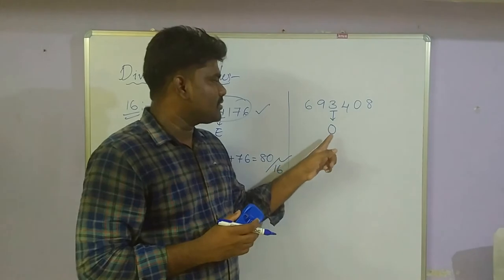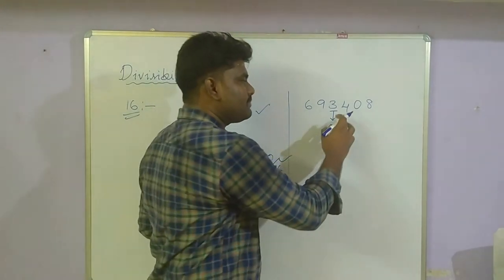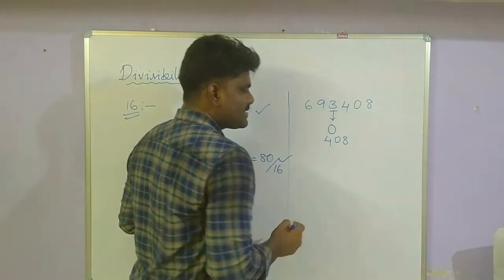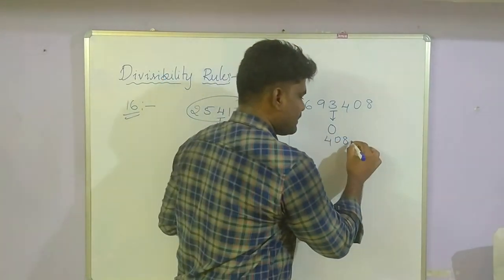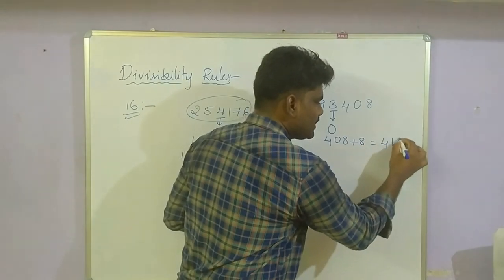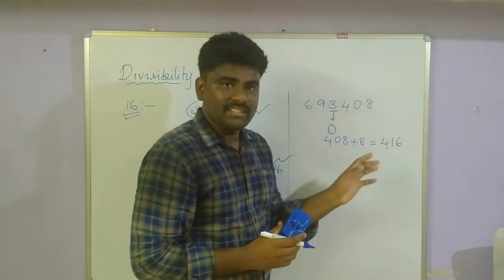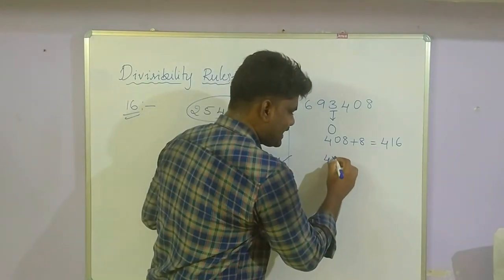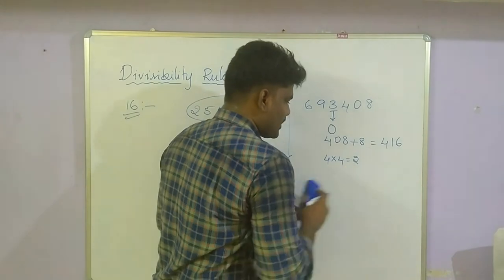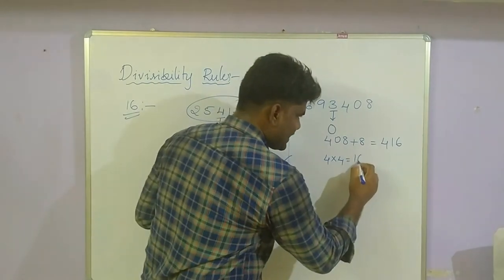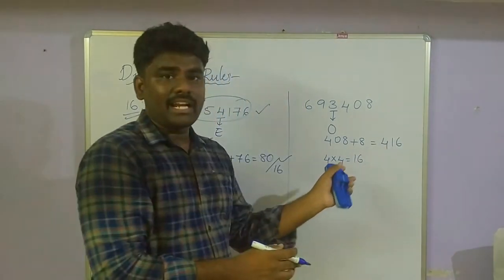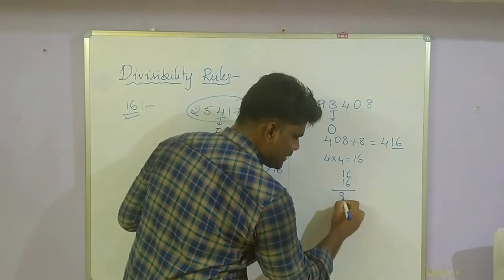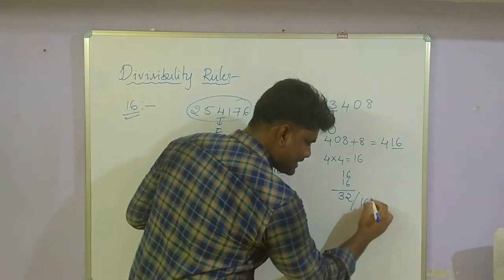Now when the thousands place is odd, take the last four digits and add 8. That gives us 4 digits to work with. Take the hundreds place digit, which is 4. Multiply by 4: 4 × 4 = 16. Add 16 to the remaining digits (16): 16 + 16 = 32. 32 is divisible by 16.